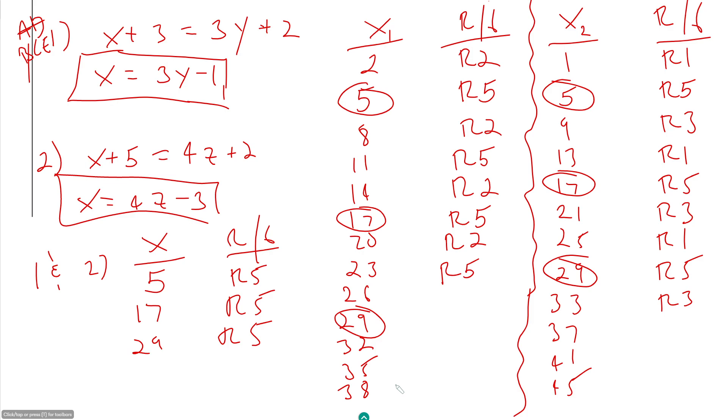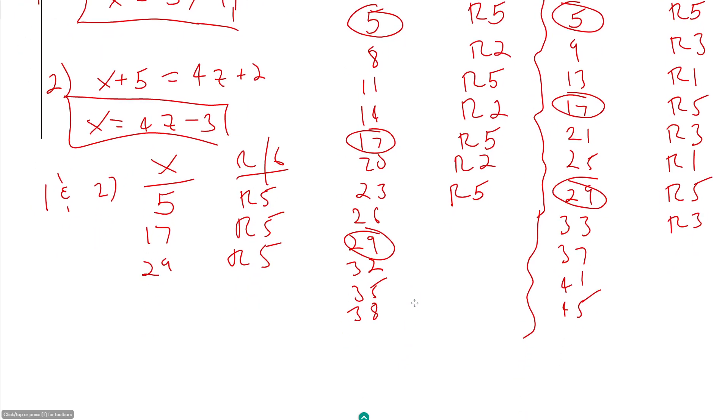Anything else that we... looks like we get it. 41 looks like the next one. So 41 divided by 6 is 6 remainder 5, right?